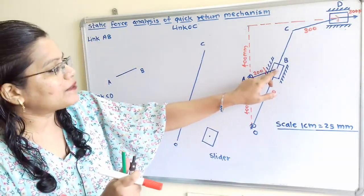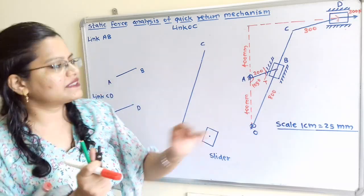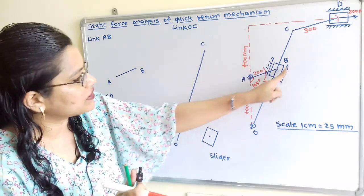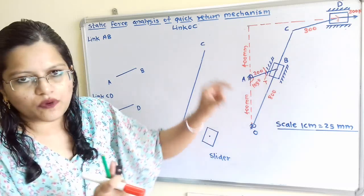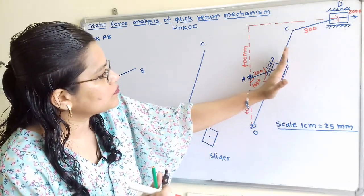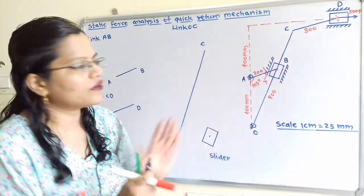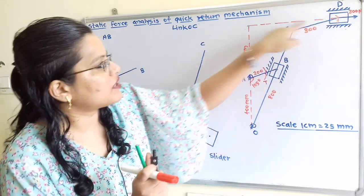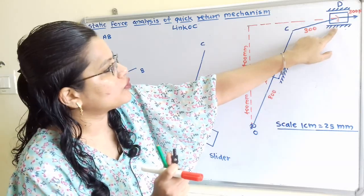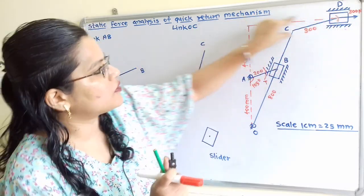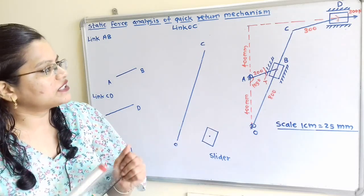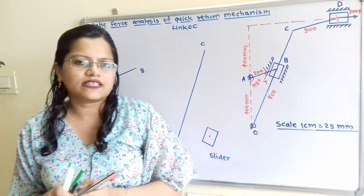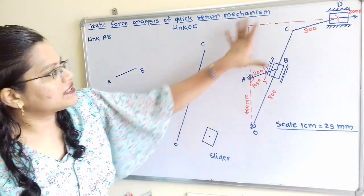At point B there is a slider, and its motion is along link OC. We draw a block showing the slider parallel to link OC. Similarly, at point D the slider moves along the horizontal line, so we show the fixed surface with motion along the horizontal. It is also mentioned in the question that this slider has a 300 N force acting towards the right-hand side. This completes the diagram.